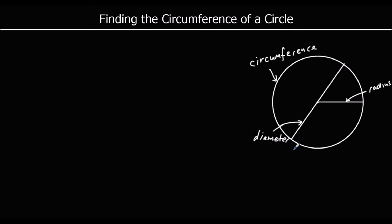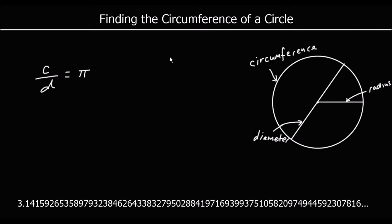In absolutely any circle, if you take the circumference and divide it by the diameter, you get the same number. We call that number pi. Pi is just a number — it's an irrational number, so it goes on forever: 3.1415926535 and so on.